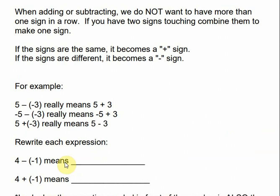When adding or subtracting, we don't want to have more than one sign in a row. If we have two signs that are touching, we need to combine them into one sign. If the signs are the same, it becomes a plus sign. If the signs are different, it becomes a minus sign. For example, 5 minus negative 3 — those signs are the same, so it becomes a plus sign. It doesn't change the sign of the number in front; it's just the two signs that are touching.